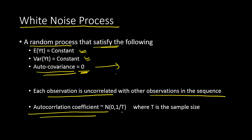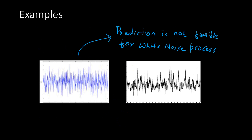What we usually do is find out the autocorrelation coefficient. We assume that the autocorrelation coefficient is normally distributed with mean zero and standard deviation 1/√T, where T is the sample size. We then use a statistical test to see whether a particular time series is white noise or not.